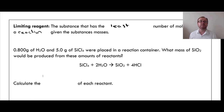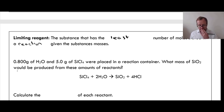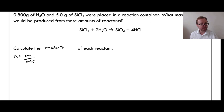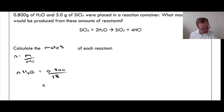For example: 0.80 grams of H₂O and 5 grams of SiCl₄ were placed in a reaction container. What mass of silicon dioxide would be produced from these amounts of reactants? First, calculate the moles of each reactant since we're given both masses, using N = M / Mr. The moles of H₂O = 0.80 ÷ 18.